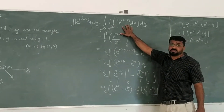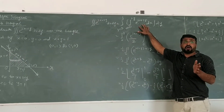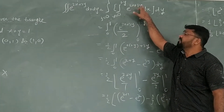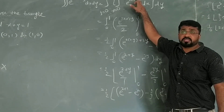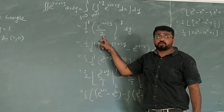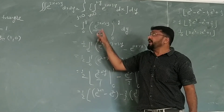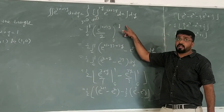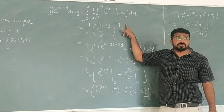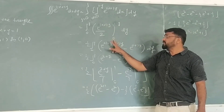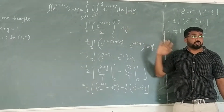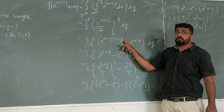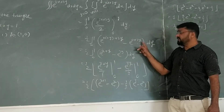Now we do the integration with respect to x. Remember, when integrating with respect to x, y is treated as constant. The exponential integration works the same way. We apply the limits 0 to 1 minus y. Putting in the upper limit gives 2 minus 2y, and combining: 2 minus 2y plus 3y gives 2 plus y. The lower limit gives e to the power 3y.